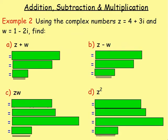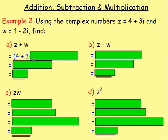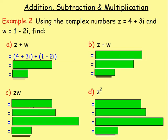Moving on to addition, subtraction, and multiplication of complex numbers. Example 2: using Z = 4 + 3i and W = 1 − 2i, find Z + W. With Z + W, substitute in Z = 4 + 3i and add W = 1 − 2i. When substituting, put brackets around what you're replacing.